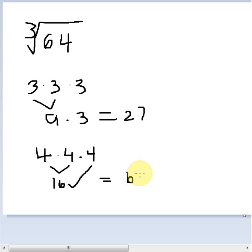Because 4 times 6 is 24, you add the 2, 4 times 1 gives me 4, plus 2 gives me 64. So the cube root of 64 is going to be 4.